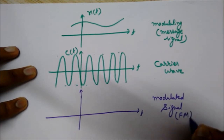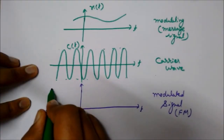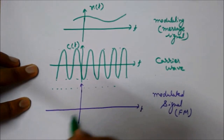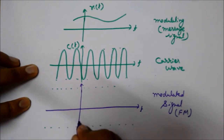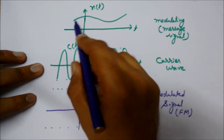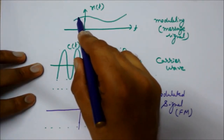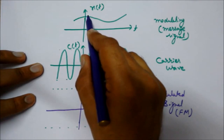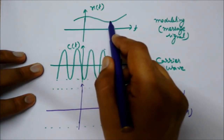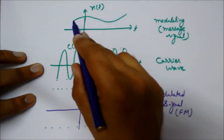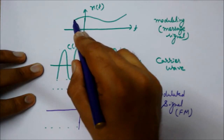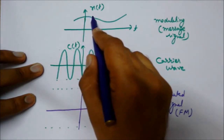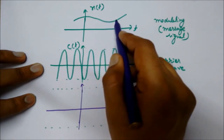This is the FM — the frequency modulated signal. As I mentioned, the amplitude will not change; only the frequency of the carrier wave will be changed — I'm keeping the amplitude constant. Now, where the message signal amplitude is increasing and reaches maximum at this point, then decreasing, our carrier wave frequency will start from a certain value, then increase, then decrease to a minimum.